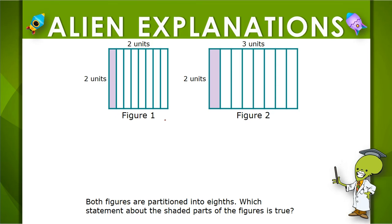We're given two figures, and they're both separated into eighths, and we want to know which statement about the shaded pieces is true. A lot of these answer choices have to do with whether or not these shaded areas are equal in size. Both figures are separated into eighths, so this shaded piece is one eighth of this figure, and this shaded piece is one eighth of this figure.